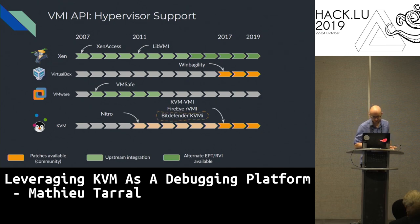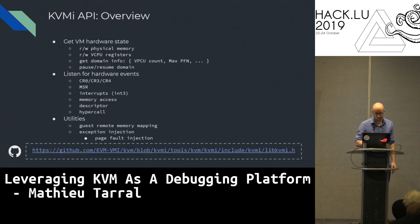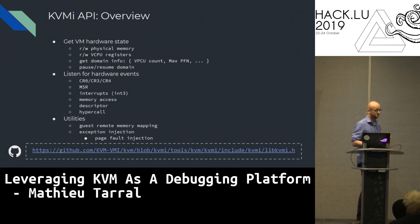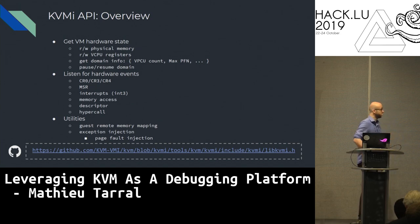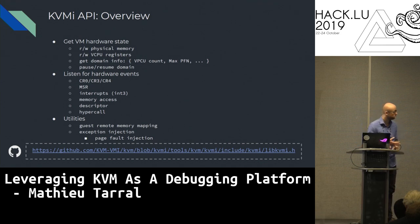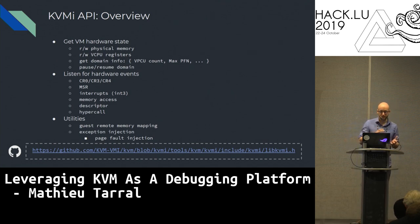Looking at the Bitdefender KVMI subsystem: it's interesting because you have the same API you can find already on Xen. You can query the VM hardware states, read physical memory, VCPU registers. You can listen for hardware events: control registers, CR3, MSRs, interrupts, memory accesses, descriptors, and hypercalls. And you can also inject page faults, which is really important. You can see the full API in libkvmi.h.